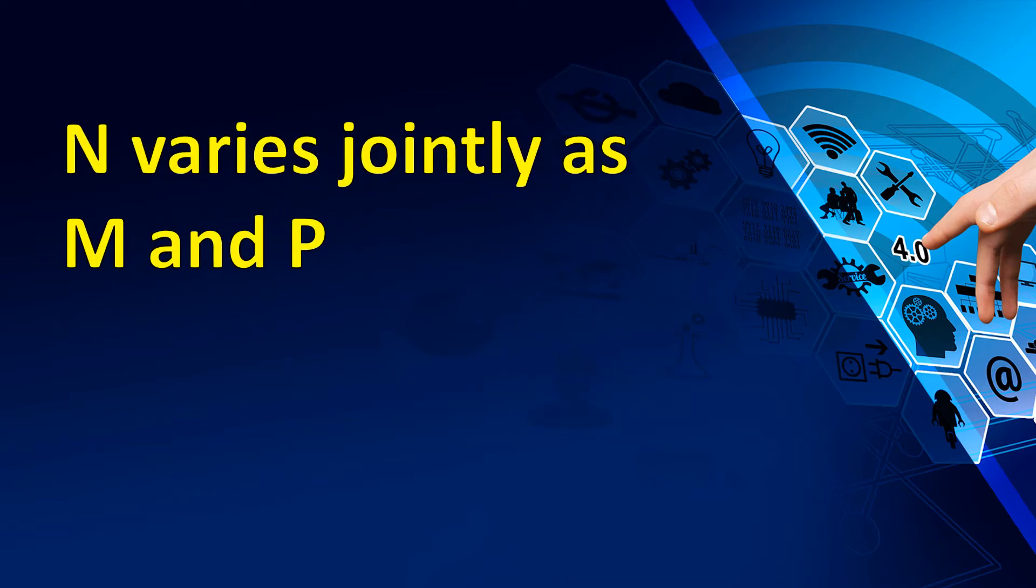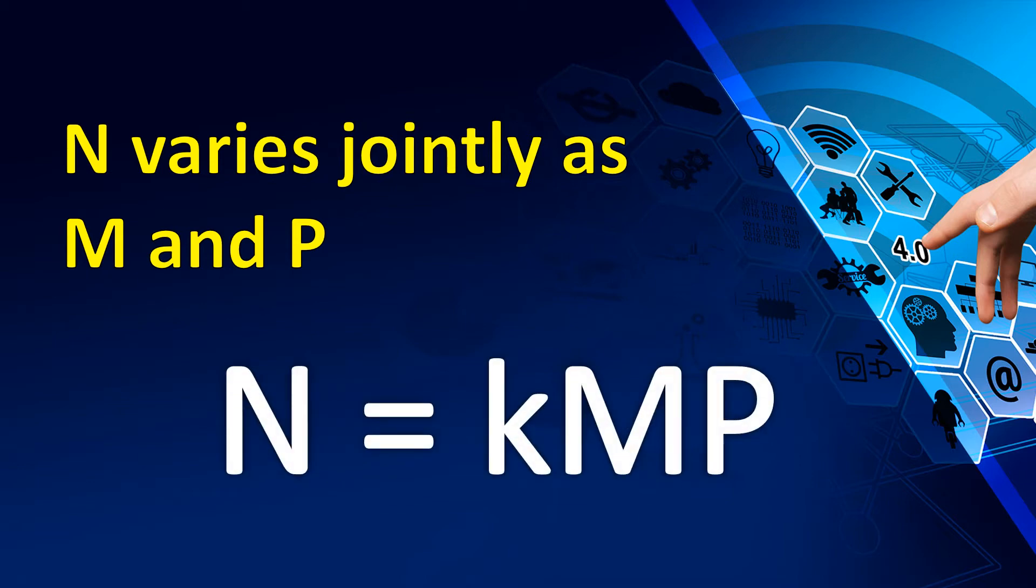What about n varies jointly as m and p? So, kung inyong mapapansin, capital letter yan. So, be careful. Dapat kung lowercase letter or maliit na letter ang ginamit, ganun yung gagamitin natin sa ating equation. Kung malaki naman, malaki. So, this is written as n equals k m p.